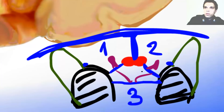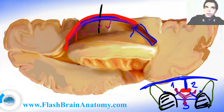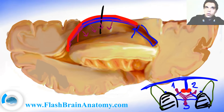The choroid plexus also goes inside the foramen of Monroe in one row, from one side and from the other side, and then it exits into the third ventricle. We also have the choroid plexus in the third ventricle, and the choroid plexus goes all the way down there to the posterior horn.